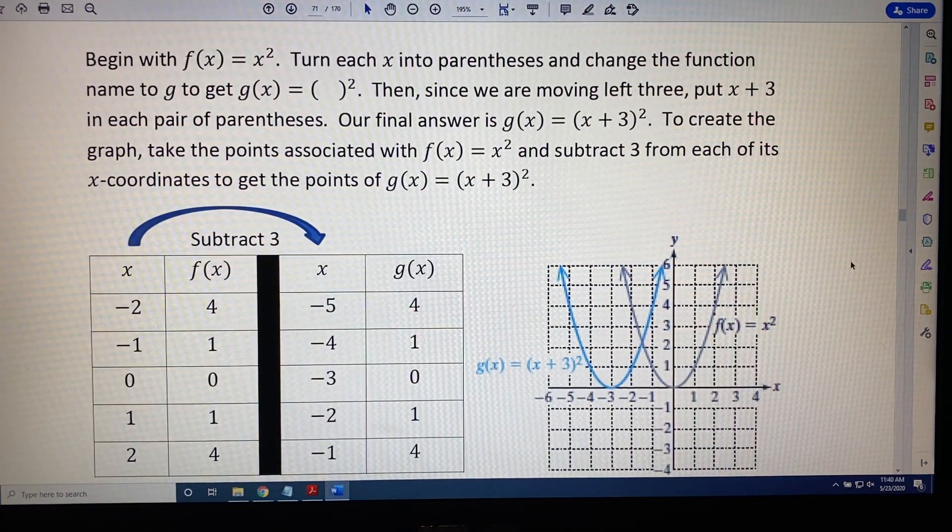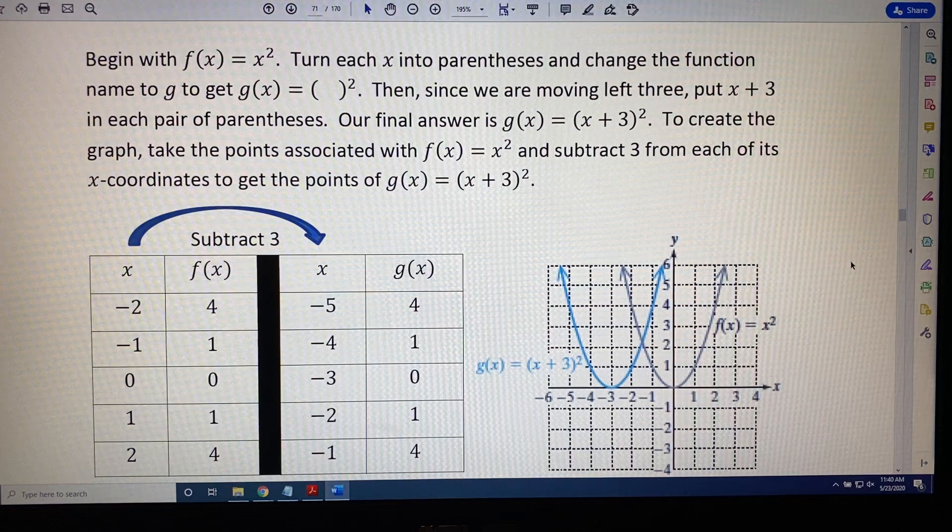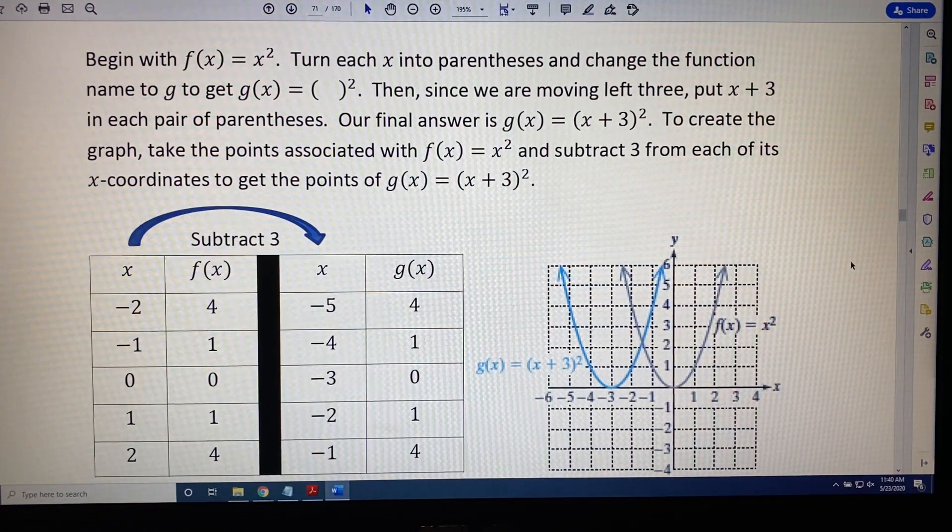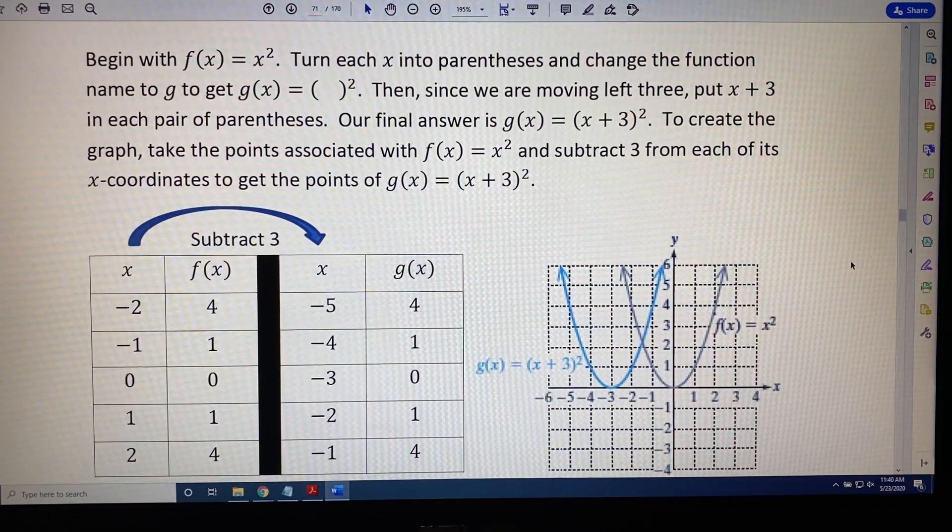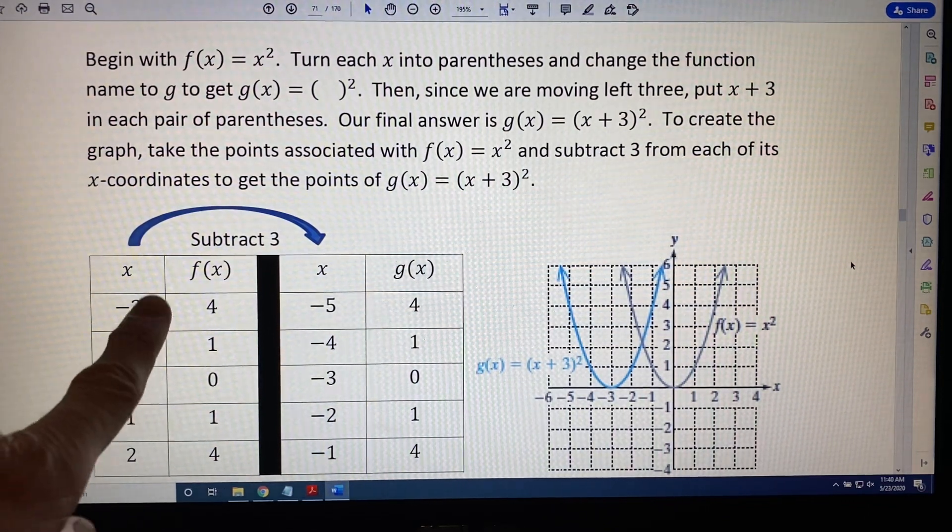To create this graph, we take the points associated with f(x) = x² and subtract 3 from each of its x-coordinates to get the points of g(x) = (x + 3)².